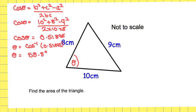Now I've got the angle theta of 58.8 degrees, I can use the sine formula. The area is equal to one-half ab sine C. So the area is equal to one-half times 8 times 10 times sine 58.8.